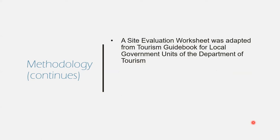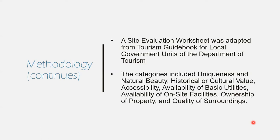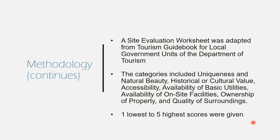The site evaluation worksheet used is from the tourism guidebook of the Department of Tourism. This worksheet showed the name of the municipality, site or attraction, site classification, and travel time to the site. The categories included uniqueness and natural beauty, historical or cultural value, accessibility, availability of basic utilities, availability of on-site facilities, ownership of property, and quality of surroundings. The sites were given scores from 1 to 5 based on their possessed characteristics, with 5 being the highest and 1 the lowest. After that, I made a summary of the ranked list of sites with the most potential.